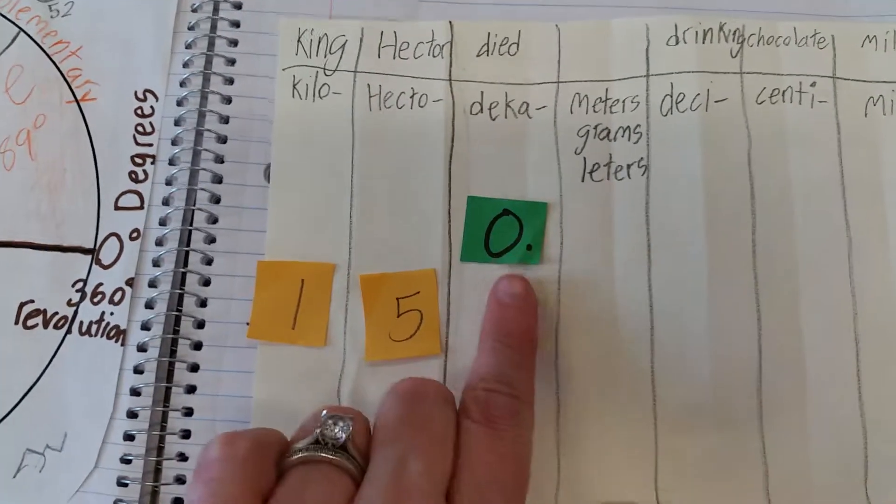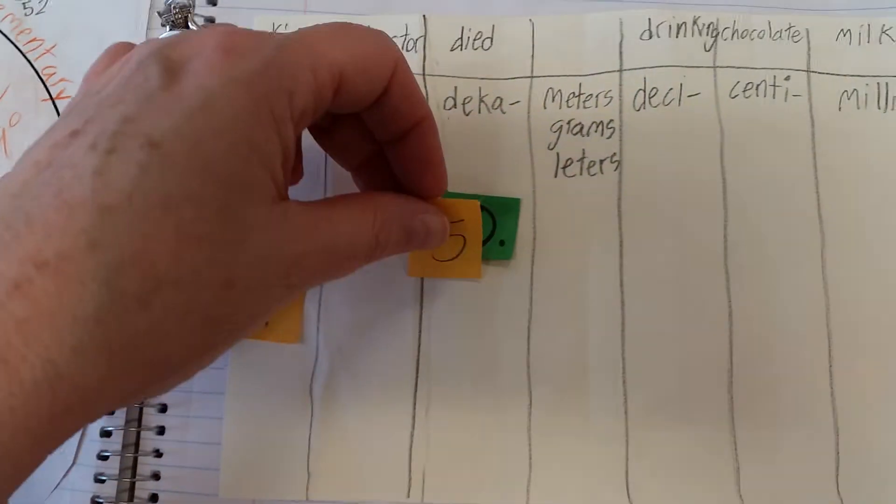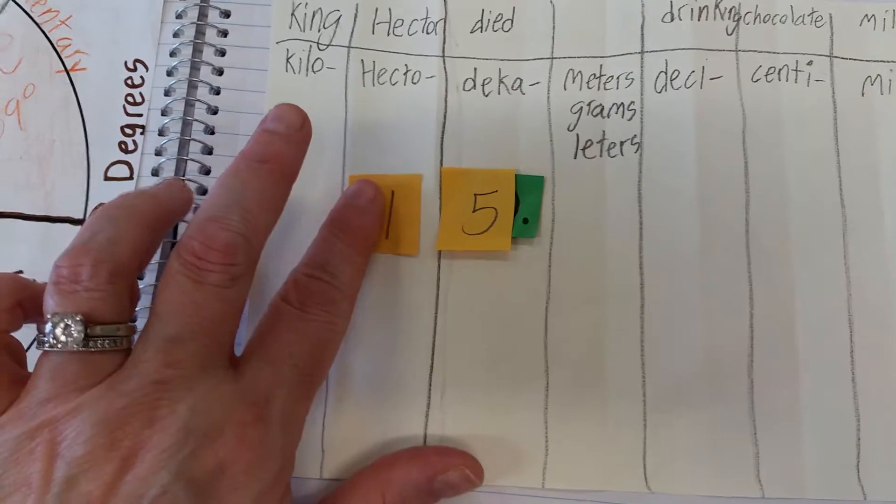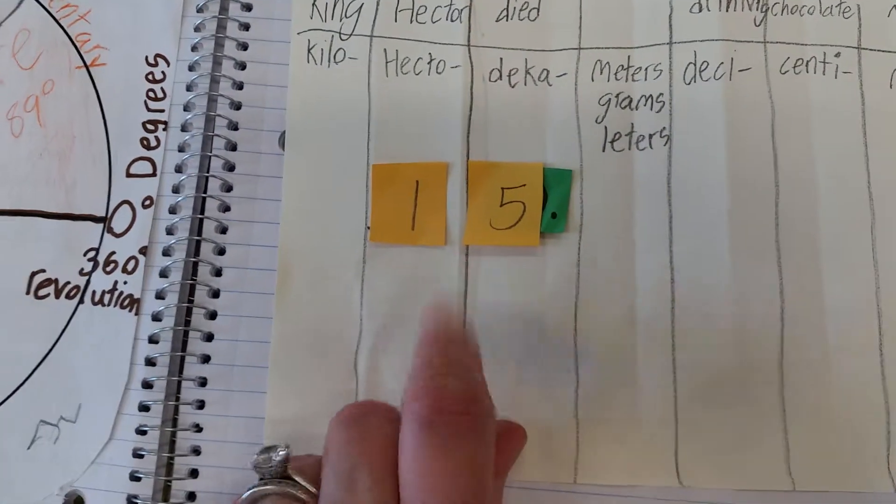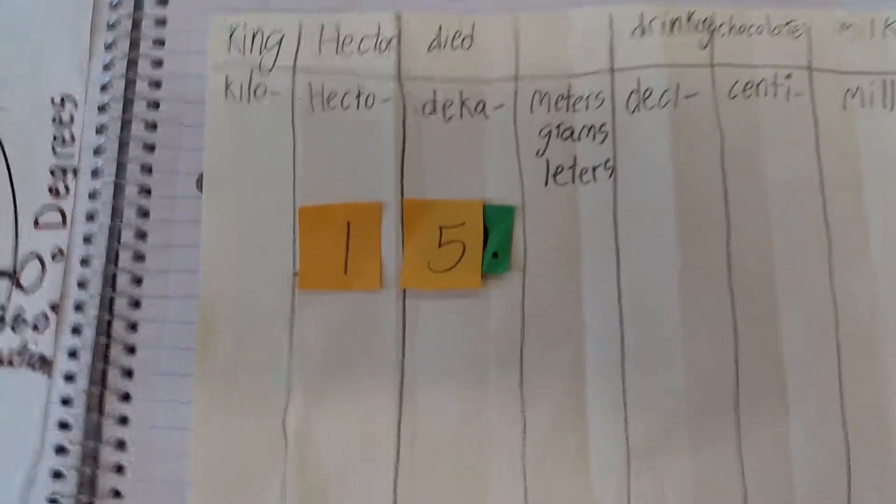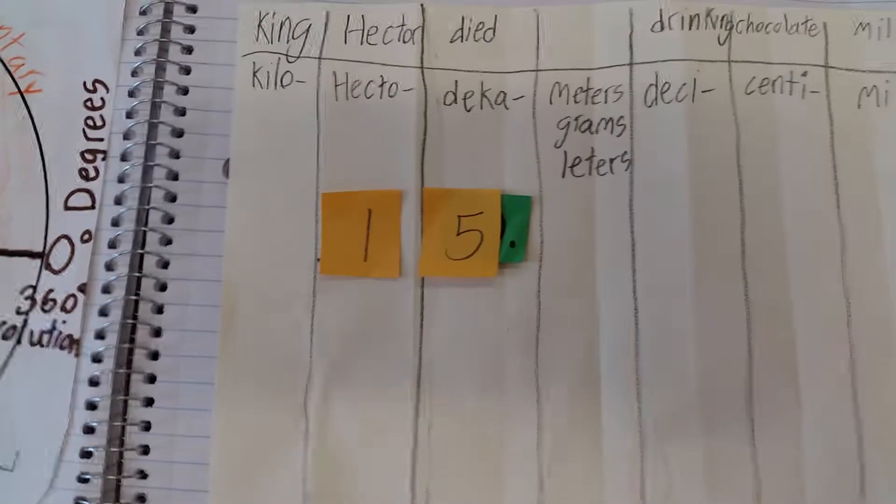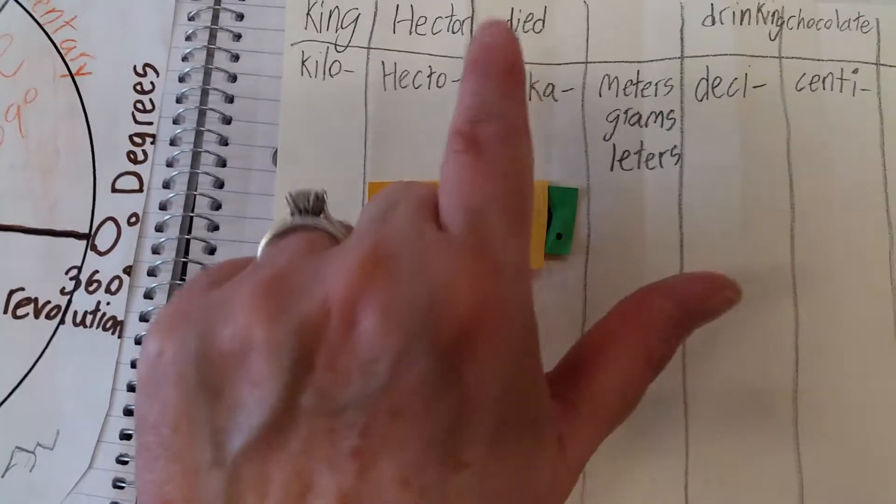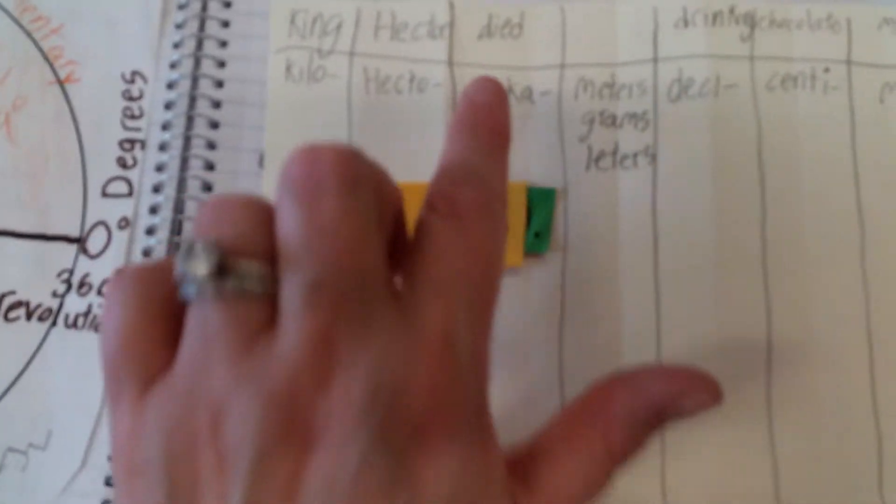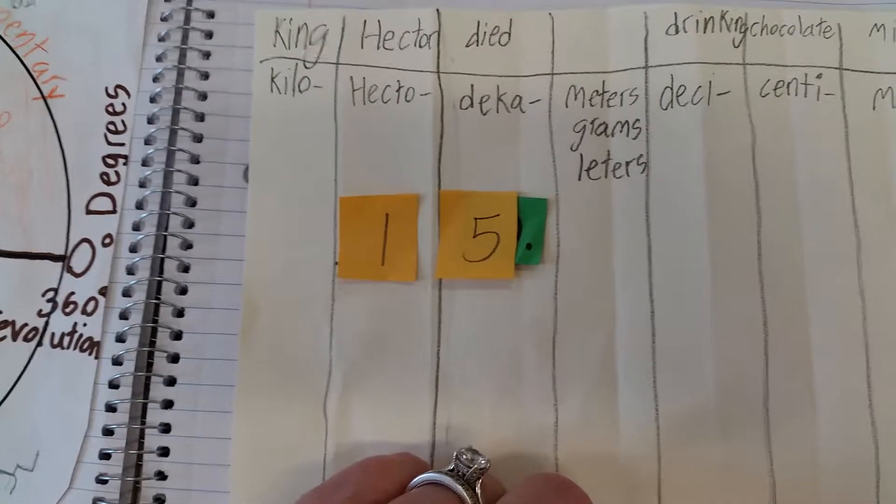We're trading decameters, so we put our froggy there. And we just make sure that we put our digits, just one digit in each column. And we make sure that our one's place is lining up with the place that we just said, deca. So 15 decameters.